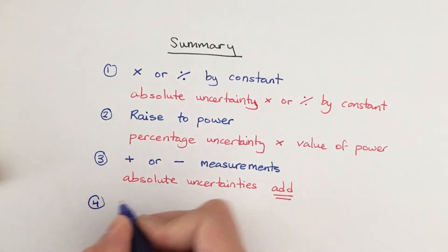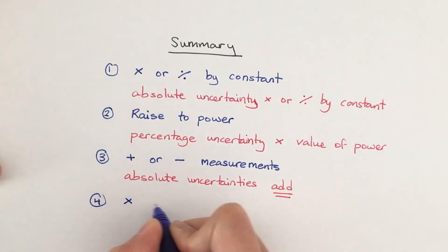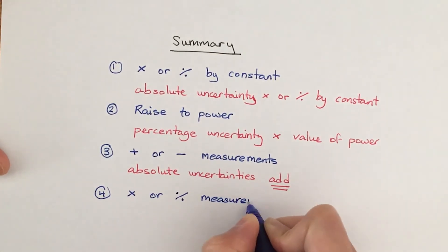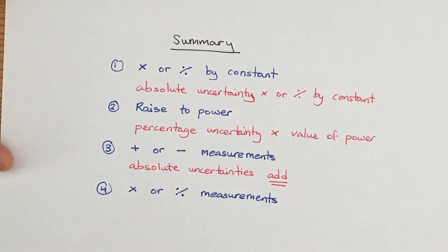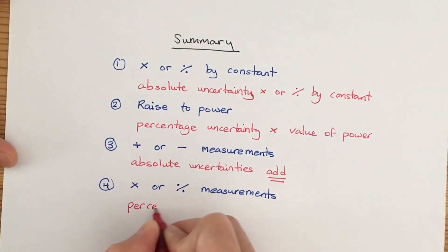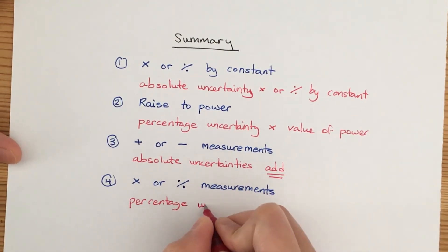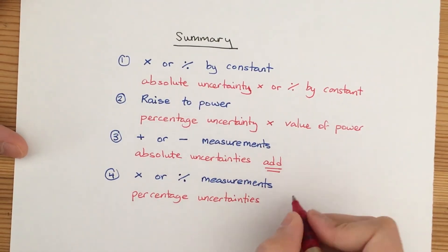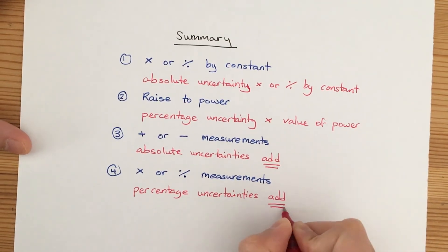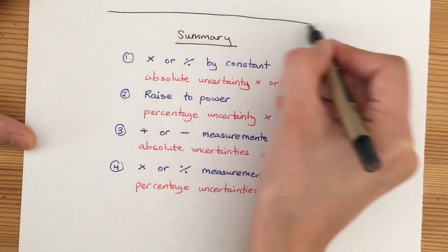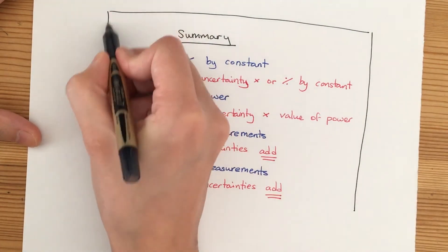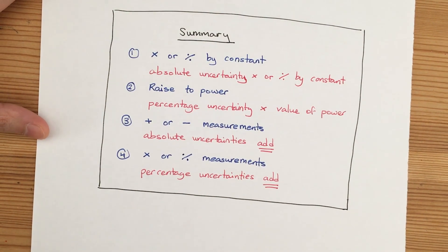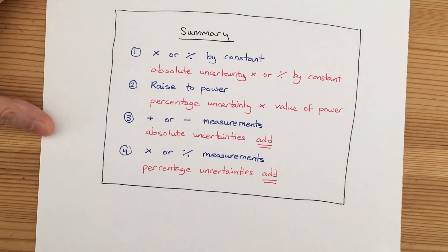Finally, Rule 4: if we multiply or divide measurements together and they have individual uncertainties, we add their percentage uncertainties together. I hope you find this video on combining uncertainties useful. Feel free to take a screenshot of the summary page so that you have it ready whenever you do your data analysis. Thanks for watching!